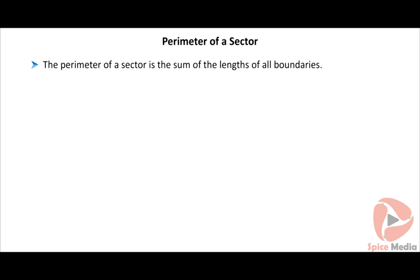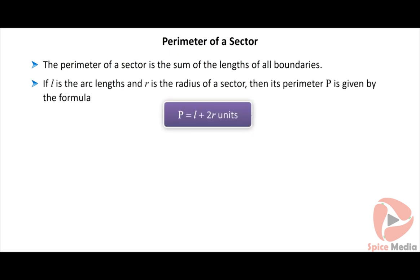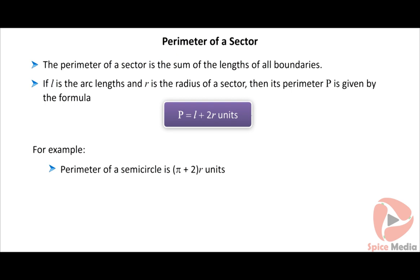The perimeter of a sector is the sum of the lengths of all boundaries. If L is the arc length and R is the radius, then the perimeter P is given by P = L + 2R units. For example, the perimeter of a semicircle is equal to (π + 2) × R units, and the perimeter of a quadrant of a circle is equal to (π/2 + 2) × R units.